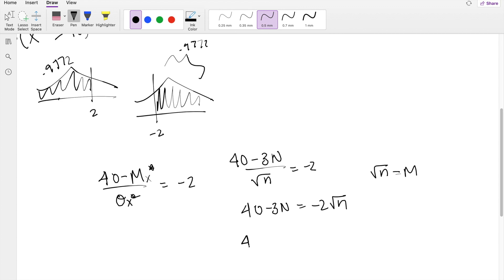So if I replace those, this becomes 40 minus 3m squared, right? Because this is technically like n to the half is equal to m, right? So then n, just by itself, must be m squared. So this is why this is m squared is equal to negative 2m.